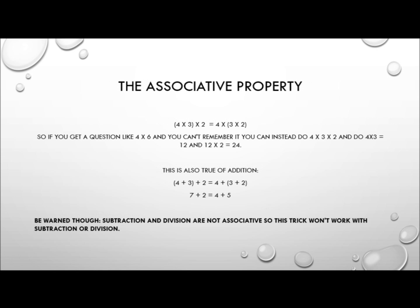The associative property basically says if you've got 4 times 3 and you want to multiply all that by 2, that's the same as saying 4 times all of 3 times 2. So if you get a question like what is 4 times 6 and you can't remember the answer, you can instead do 4 times 3 times 2: 4 times 3 equals 12, and 12 times 2 equals 24. So 4 times 6 is 24.